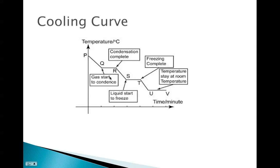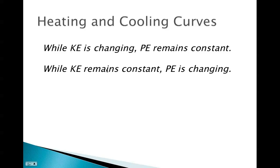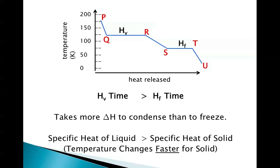Here again is a description of how we go through these different phase changes. If kinetic energy is changing, potential energy remains constant — you should have seen that in both our heating and cooling curve. While kinetic energy remains constant, potential energy is changing. That's one big difference between our plateaus and our slopes. One last thing to note: the heat of vaporization plateau — the time it takes for a liquid-to-gas or gas-to-liquid phase change — will always have a longer plateau than the heat of fusion plateau, which represents the solid-to-liquid or liquid-to-solid change. We'll talk more about this, so jot it down in your note packet.